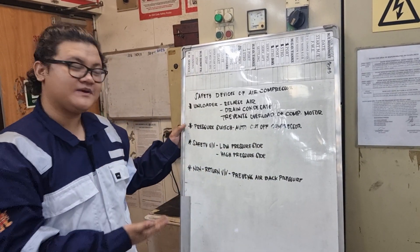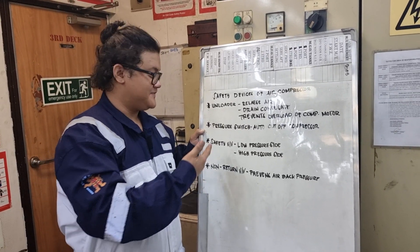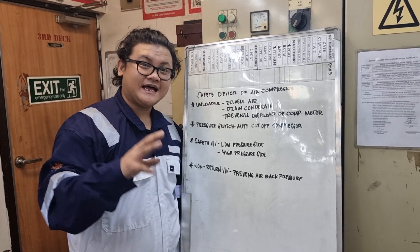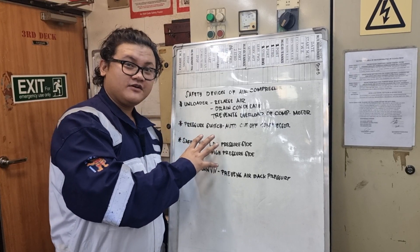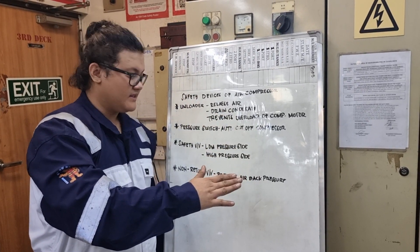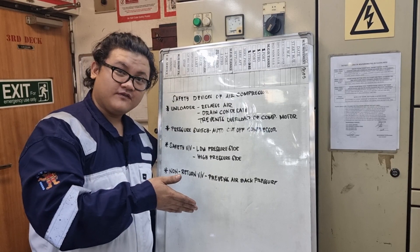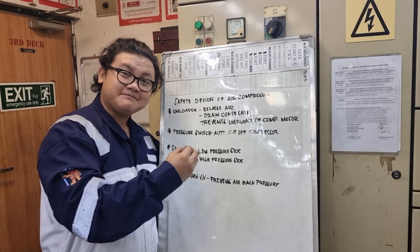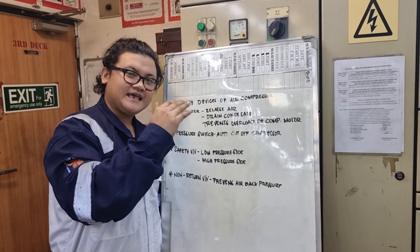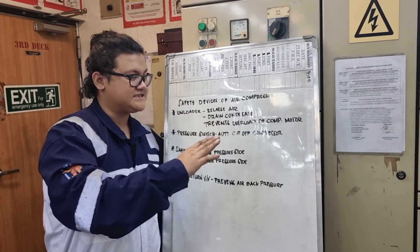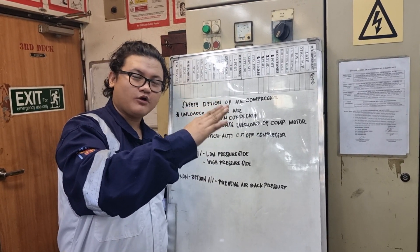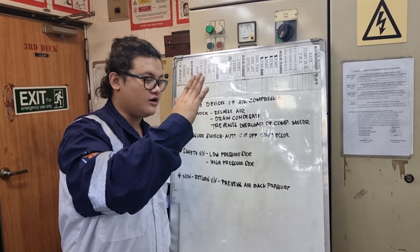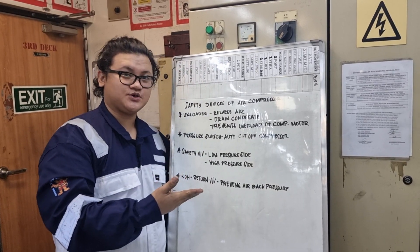Now, let's proceed with the second one: pressure switch. Pressure switch is attached to the air bottle that is receiving the air from the compressor. It automatically cuts off the supply from the compressor motor, or automatically stops the compressor motor, once it attains the desired air pressure. For example, you set it at 3 bar or 4 bar. Once you reach that pressure, it will automatically turn off the compressor motor.